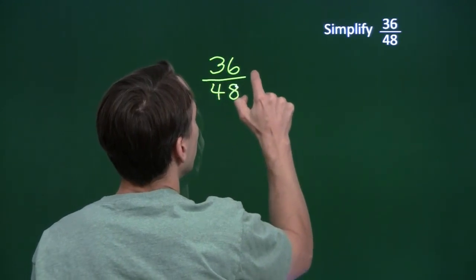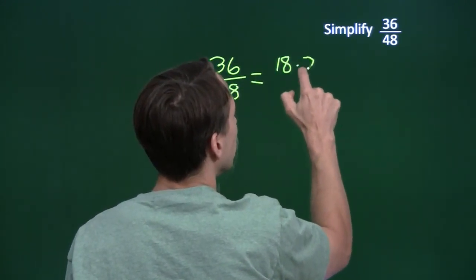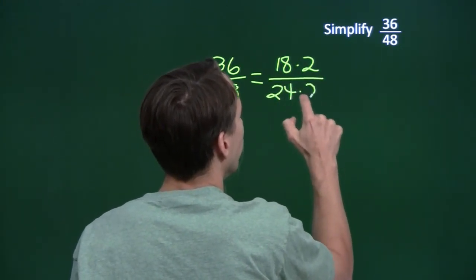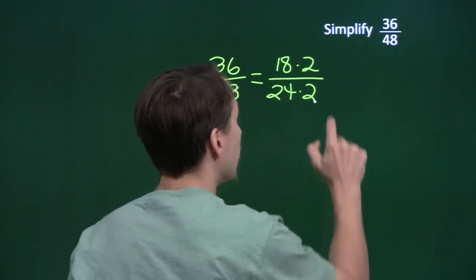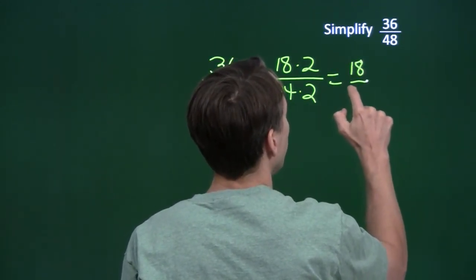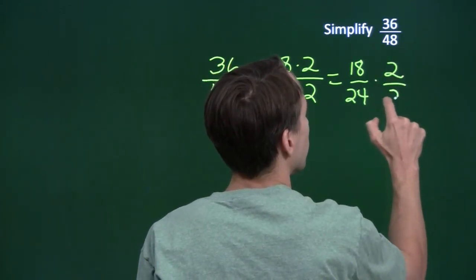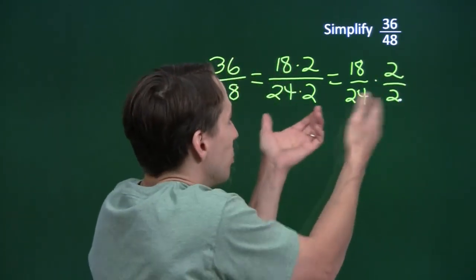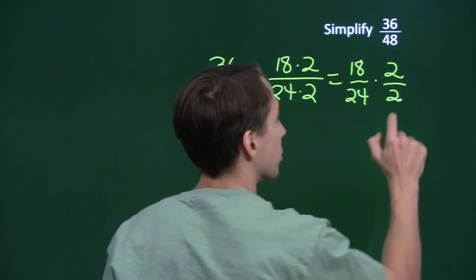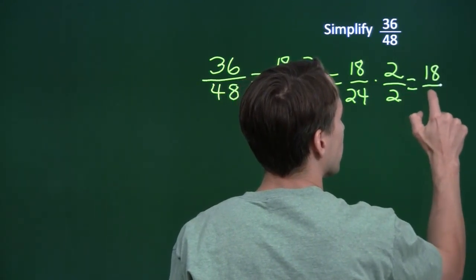So we can take out a common factor of 2. 36 over 48. We can write the 36 as 18 times 2, and the 48 is 24 times 2. You see our common factors here of 2. We can break that out into a fraction that is just 2 over 2. So we have 18 over 24 times 2 over 2. Again, all this is is multiplying fractions. This fraction equals 1. 2 over 2 is just 1. So 18 over 24 times 2 over 2, of course, that's just 18 over 24.